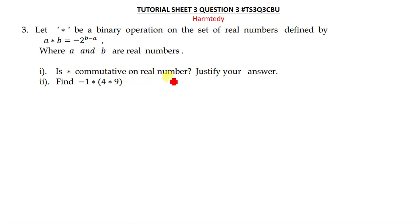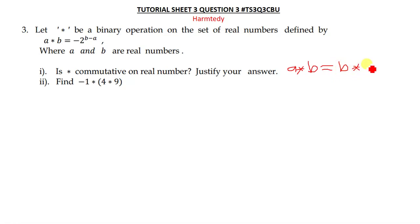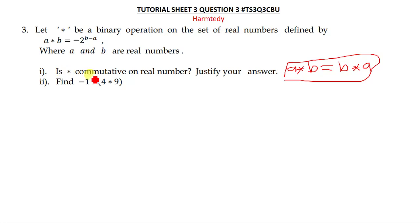For commutative law, we all know that a★b should be equal to b★a. This is the commutative law, and the question is asking us to determine whether ★ is commutative on the set of real numbers.